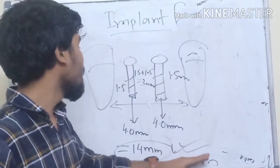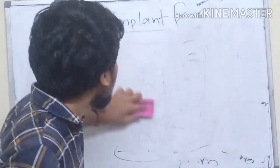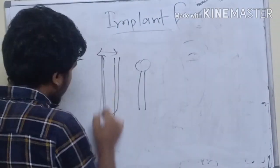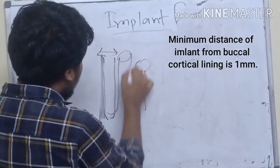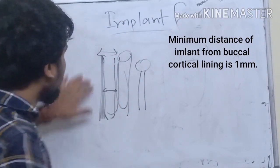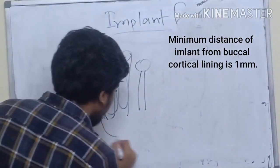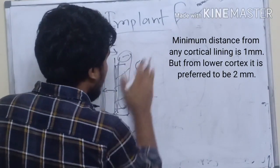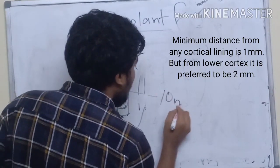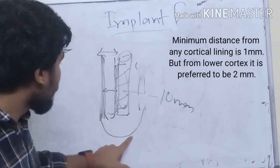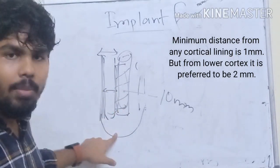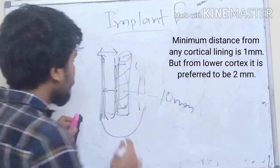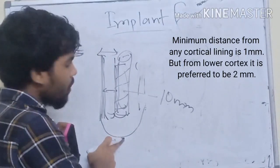The implant should be placed at least 1 mm from the buccal cortical plate. For a standard 10 mm implant, there should be at least 2 mm from the lower cortical plate, so the bone height required is 12 mm.